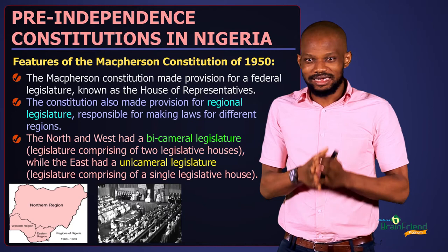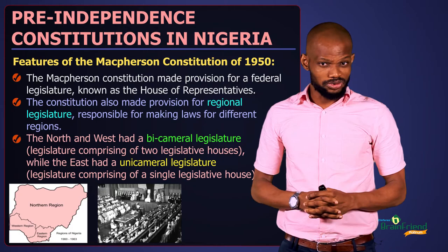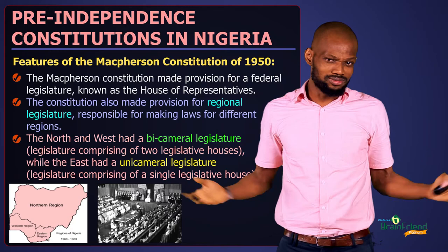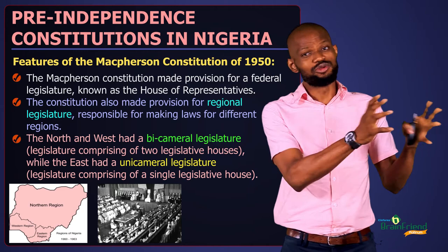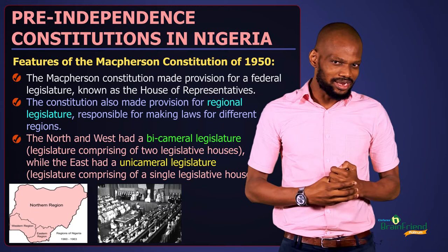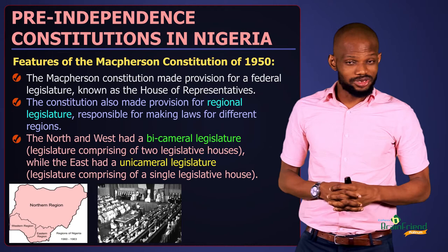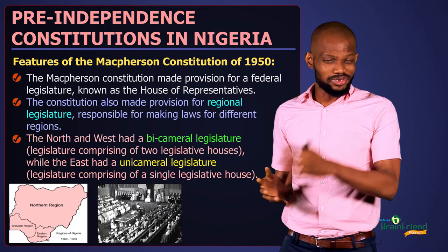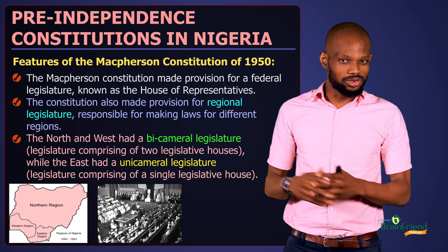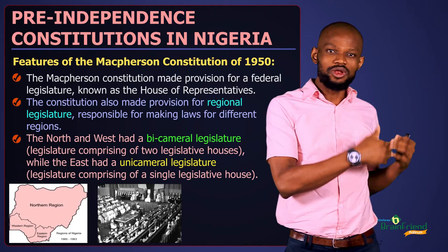McPherson organized an all-Nigerian constitutional conference — truly all-Nigerian, unlike his predecessors who filled their councils with Europeans. McPherson ensured there was no interference so that Nigerians could really determine what they wanted and how to achieve it. Another feature of this constitution was that regional legislatures were created — legislative bodies responsible for making laws for the various regions. The North had a regional legislature making laws for the North; the South had regional legislatures for both East and West.